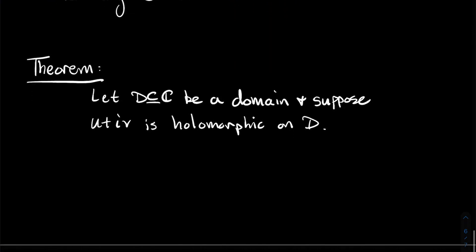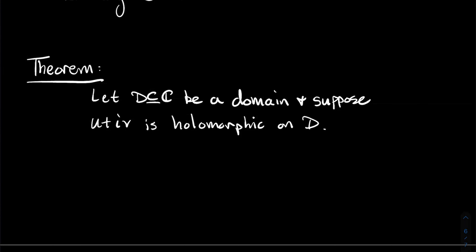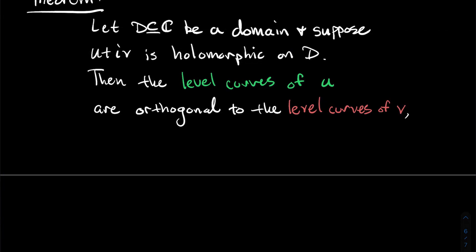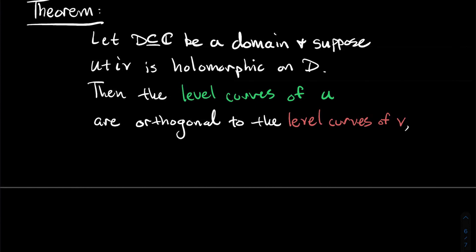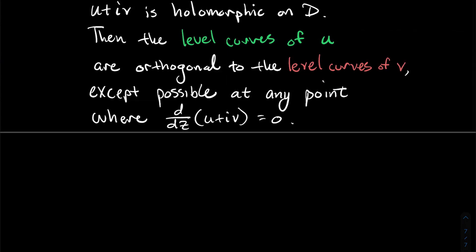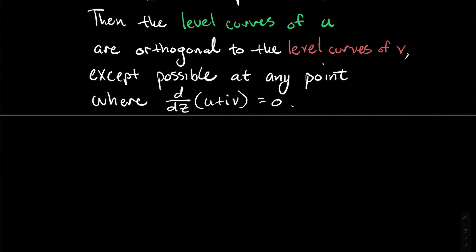Here's a little theorem. Let D be a domain in the complex plane and let U + iV be holomorphic on D. Then the level curves of U are orthogonal to the level curves of V. Remember, U is a function of two real variables that spits out a real number, so you could graph it in R³. The level curves are what you get when you fix the height coordinate to be a constant — like a topographic map. What I'm saying is if you look at the topographic maps for U and for V, those level curves are going to be orthogonal to each other — they intersect at a 90-degree angle, except possibly at any point where the complex derivative equals zero.